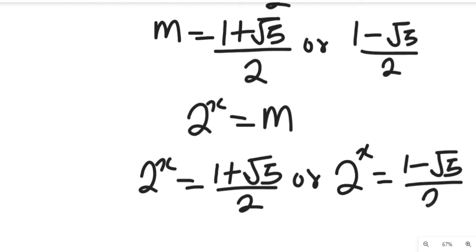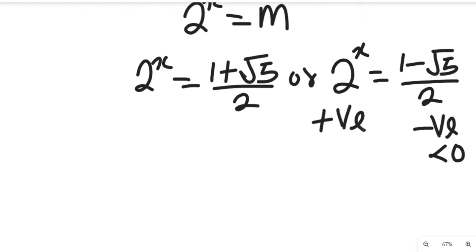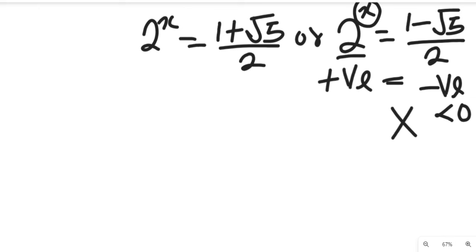Looking at these expressions carefully, you can see that 1 minus root 5 divided by 2 simplifies to a negative result, meaning that value is less than 0. Since 2 to the power of x must be positive, a positive value cannot equal a negative value. So this result will not give us a real solution, and we neglect it. We work with 2 to the power of x equals 1 plus root 5, divided by 2.